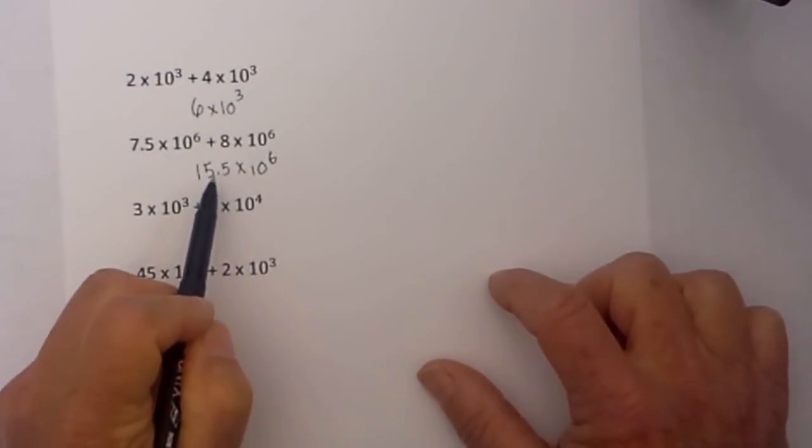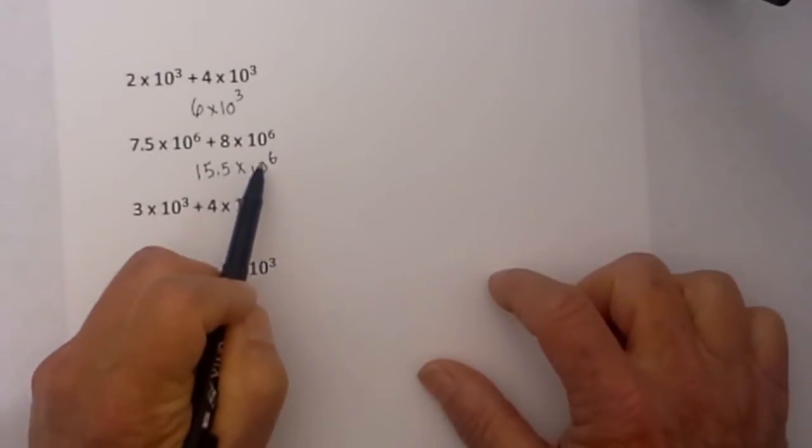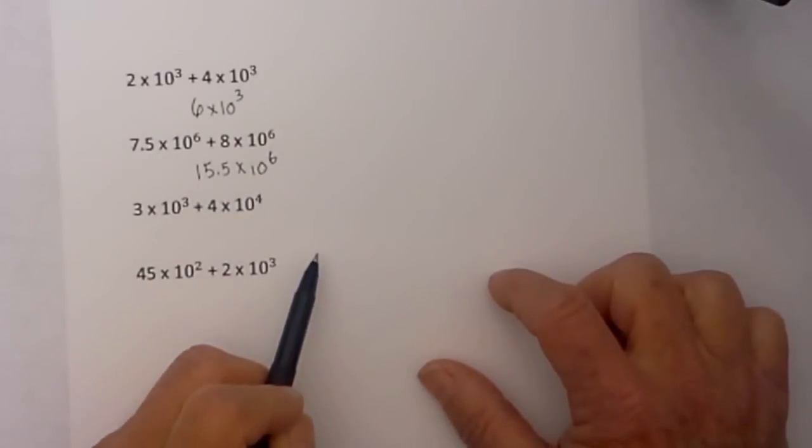So we need to adjust 15.5 and what I do is I look at it that it has an inverse relationship. The coefficient and the exponent have an inverse relationship.